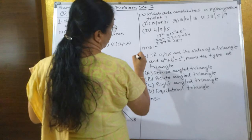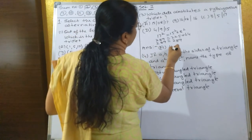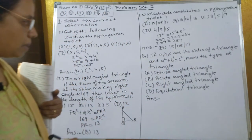So the correct option is A, that is 15, 8, and 17 is a Pythagorean triplet.